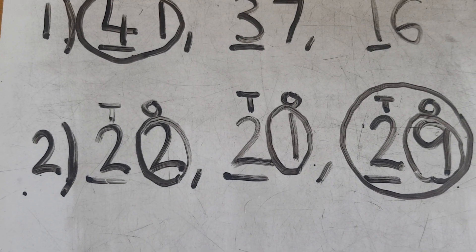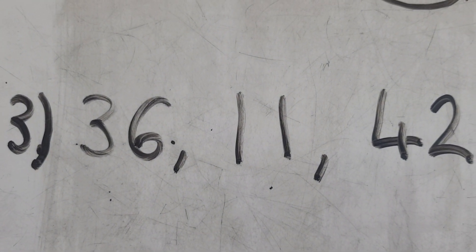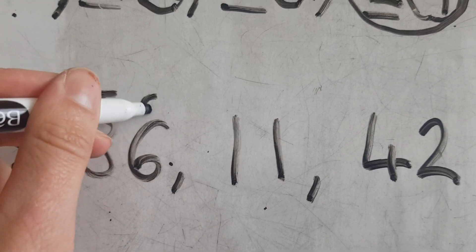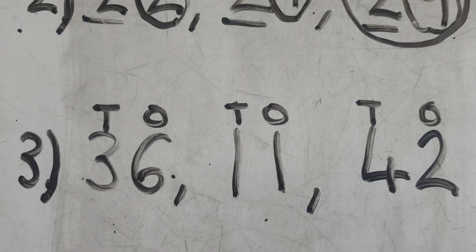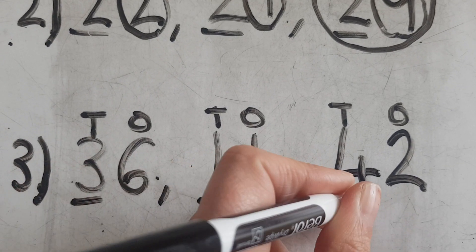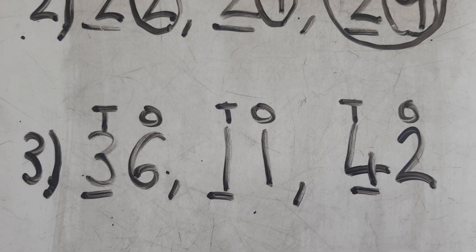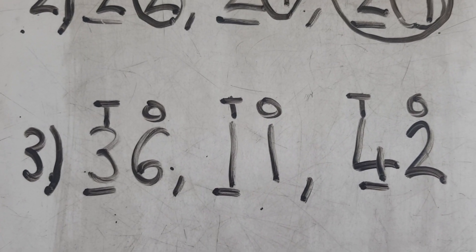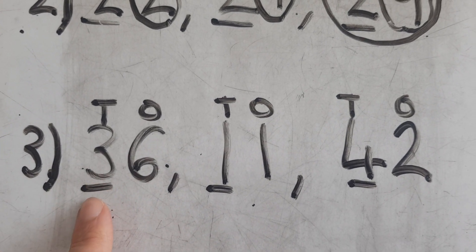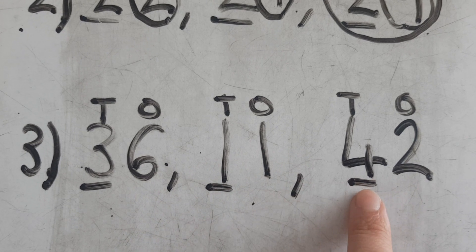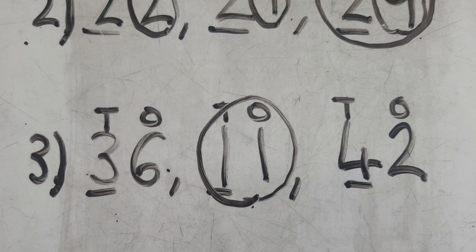What about if I'm trying to find the smallest number? Question three wants me to find the smallest number, so I'm going to find my tens and ones again and underline them. I've got three tens, one ten and four tens. I'm not looking for the biggest number this time — I'm looking for the smallest. Which number is smaller: three, one or four? We know that it's one, so 11 is the smallest number.